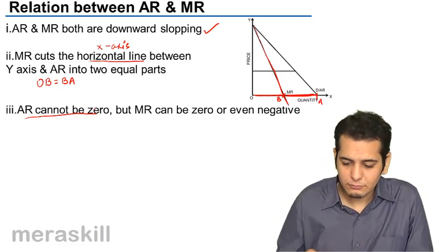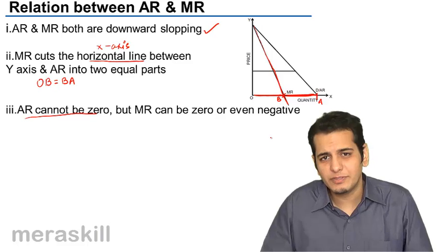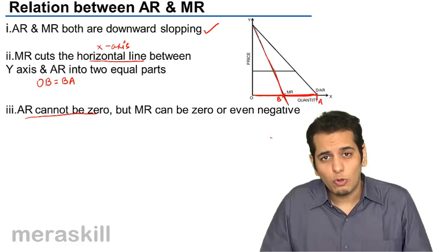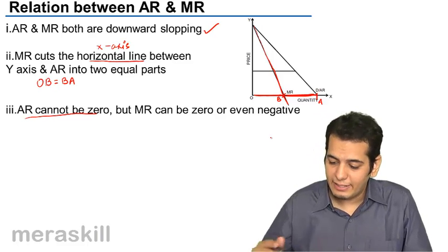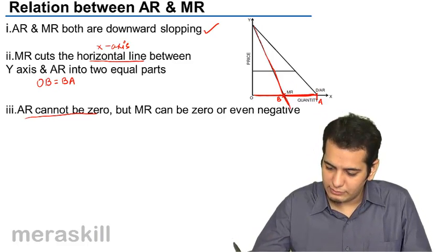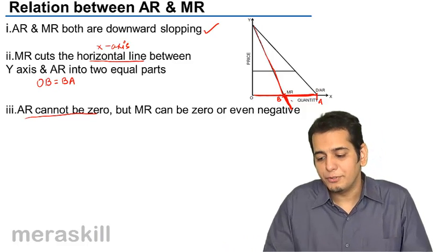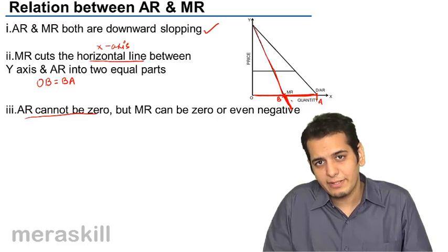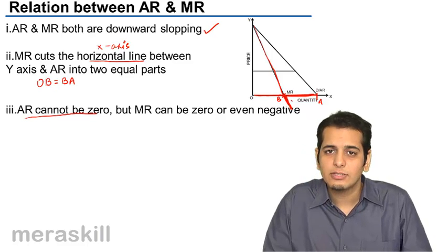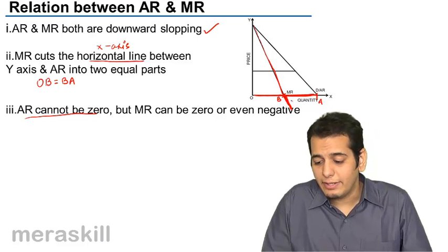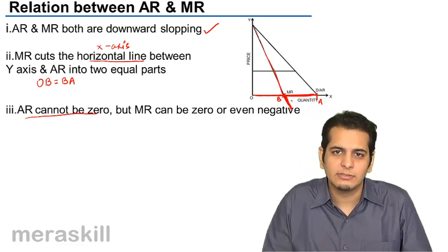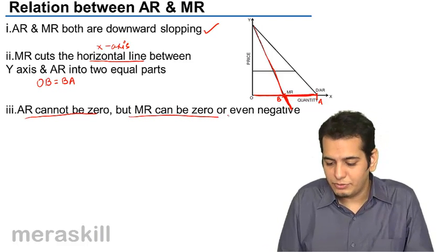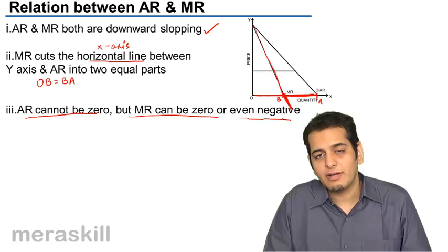However, MR can be 0 — we've seen this in the earlier case where MR was not only 0 but also negative. Thus we can see that the MR curve extends beyond the X-axis: it starts from the Y-axis, cuts the X-axis (i.e., becomes 0), and then extends beyond the X-axis, meaning it becomes negative. So MR can be 0 or negative as well.